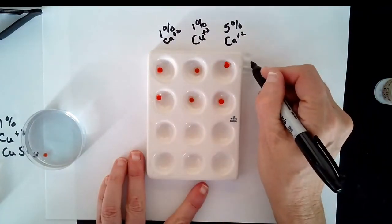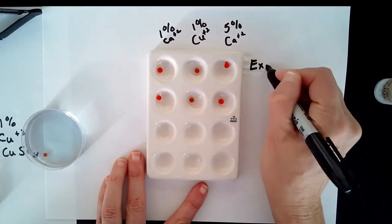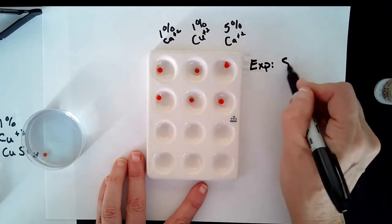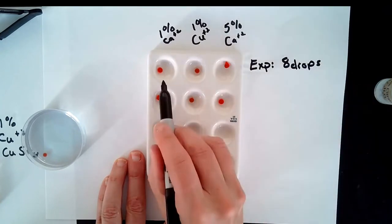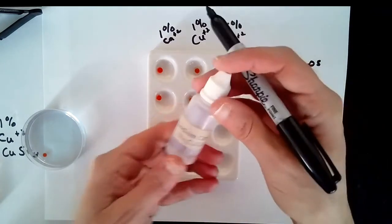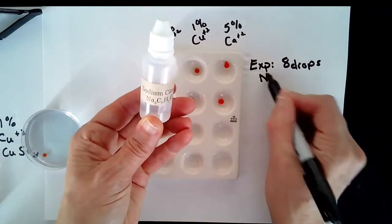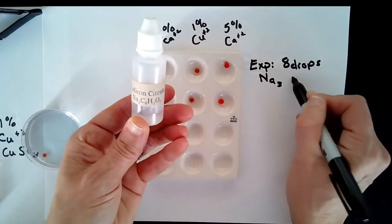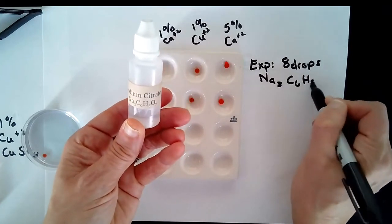And so this will be the experimental, meaning you will add eight drops to each of the wells of your experimental sodium citrate solution.